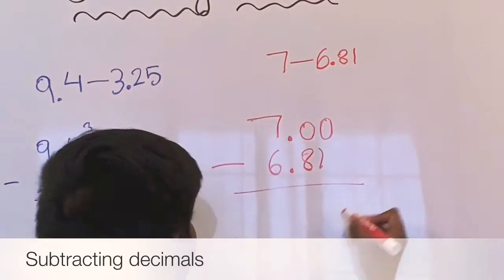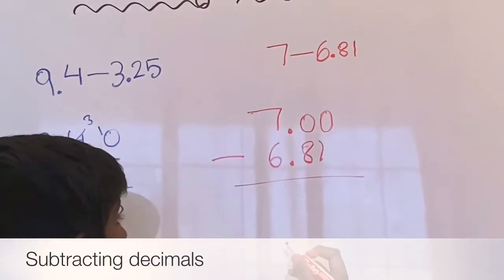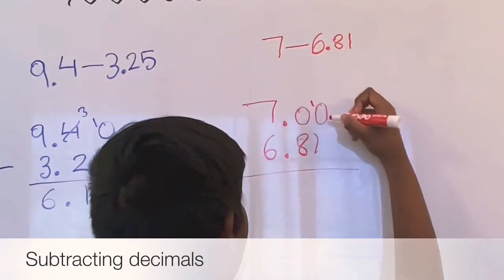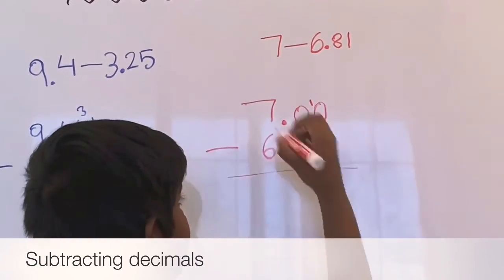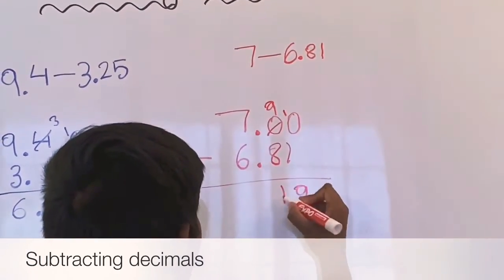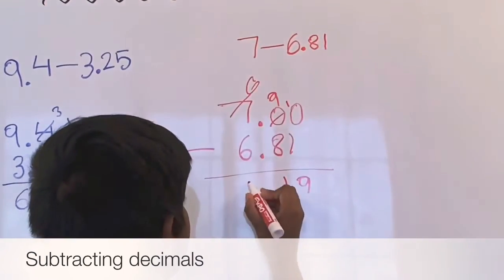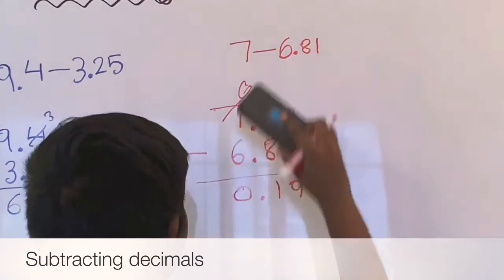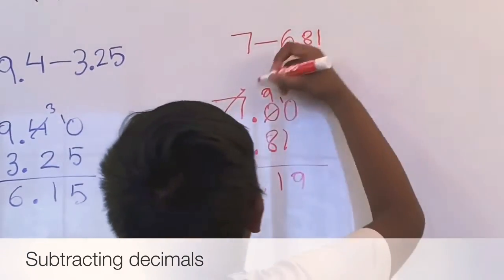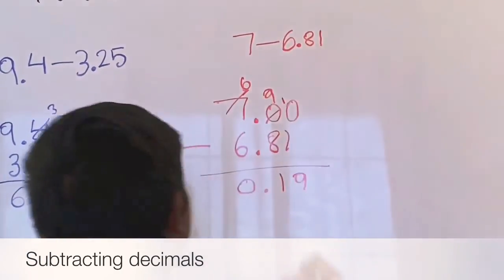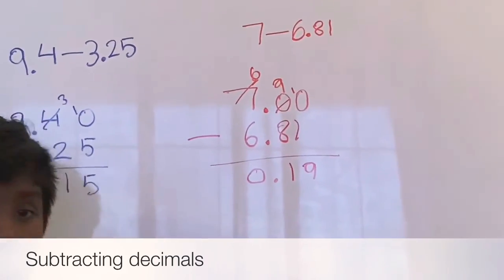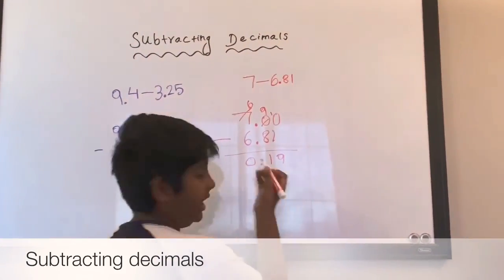We can carry over. Ten minus one is nine, minus eight is one. Bring down the decimal point. Six minus six is zero. So the answer is going to be 0.19.